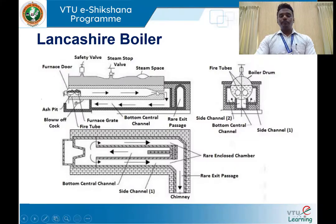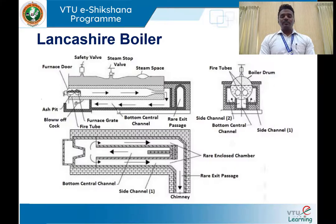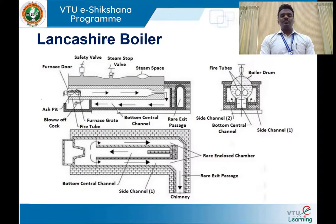The hot gases coming out at the rear end of the boiler shell are made to enter into the bottom central channel for a second run. In the Lancashire boiler, the hot gases heat the water in three runs. In the first run, hot gases from the front end flow through the fire tubes. In the second run, those hot gases pass through the bottom central channel. In the third run, the hot gases split into two streams and pass through the side channels.